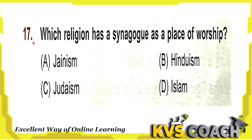Question 17: which religion has the synagogue as a place of worship? Option A is Jainism, option B is Hinduism, option C is Judaism, and option D is Islam. Jainism and Hinduism go to temples, Islam goes to a mosque, and Judaism goes to a synagogue as a place of worship. So the right answer is option C, Judaism.